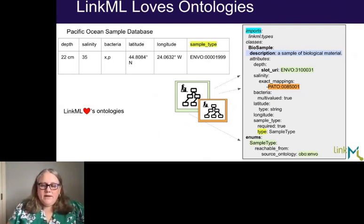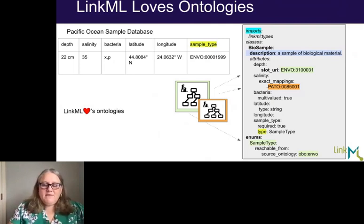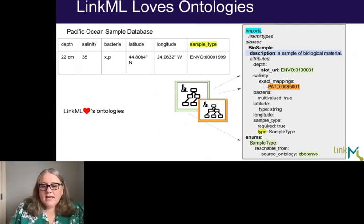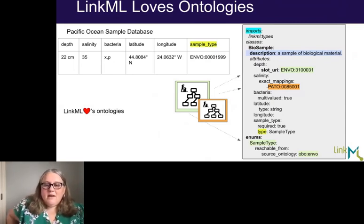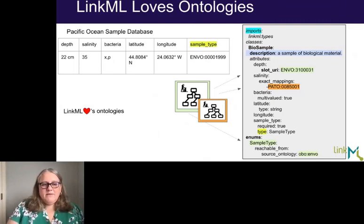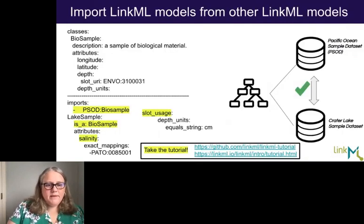Another thing to point out: if you look at the type field, I've specified another class called 'sample type.' There's an enum section in the LinkML model that defines sample type as an enumeration with values reachable from the ENVO ontology. So any serialization, validation, or transformation says that the values in the sample type column must be from the ENVO Ontology — giving us a clear way of restricting the range of that column in the model.